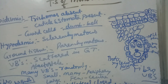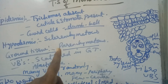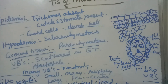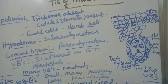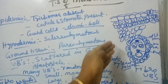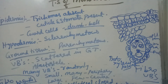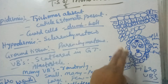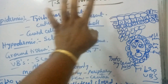In monocot stem, the structures absent compared to dicot stem are: trichomes, endodermis, pericycle, pith or medulla, and medullary rays. What is present: single layered epidermis with cuticle, sclerenchymatous hypodermis, parenchymatous ground tissue with scattered fibrovascular bundles that are conjoint, collateral, and closed with endarch xylem.